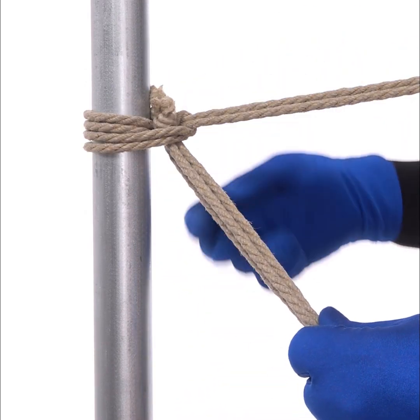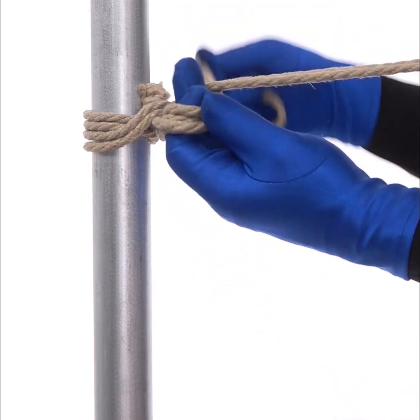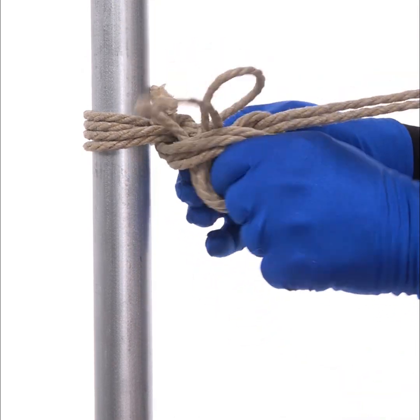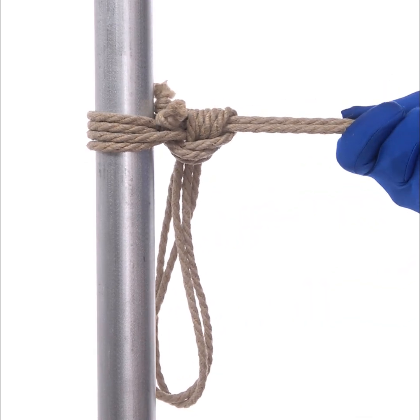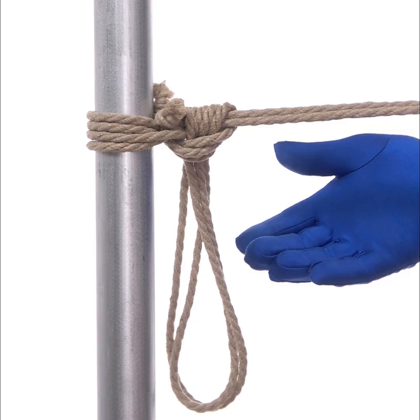Then once you have that first half hitch done, you do the second half hitch with all four of those strands, like this. That will still hold just fine, and it leaves these ends looking a little less messy.